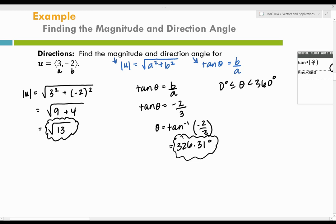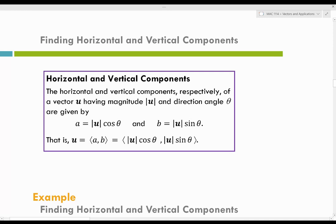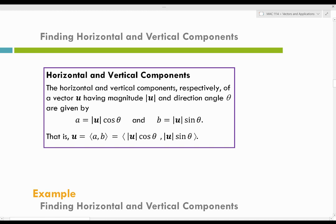Let's practice more. Sometimes they won't give you the horizontal and vertical components — you'll have to find them. The horizontal and vertical components of a vector U with magnitude u and direction angle theta are: A equals the magnitude of the vector times cosine of the direction angle, and B equals the magnitude times the sine of the direction angle. That gives us another way to represent our vector.